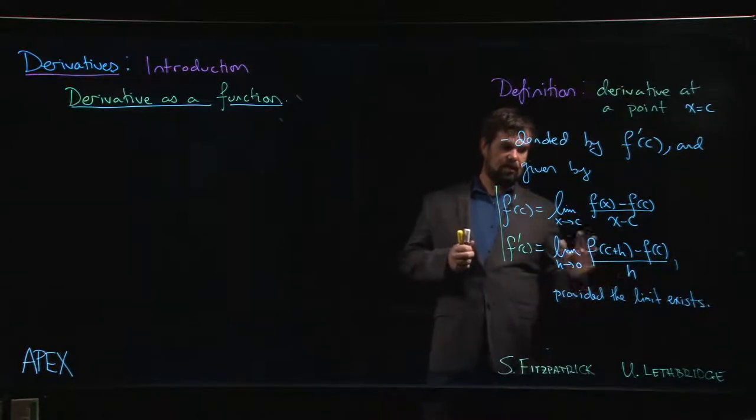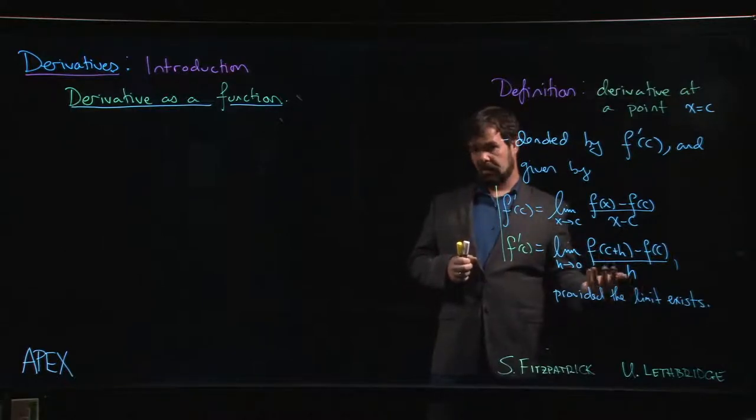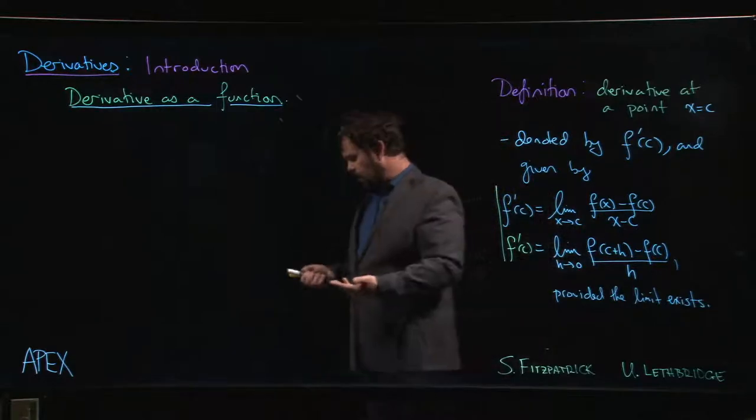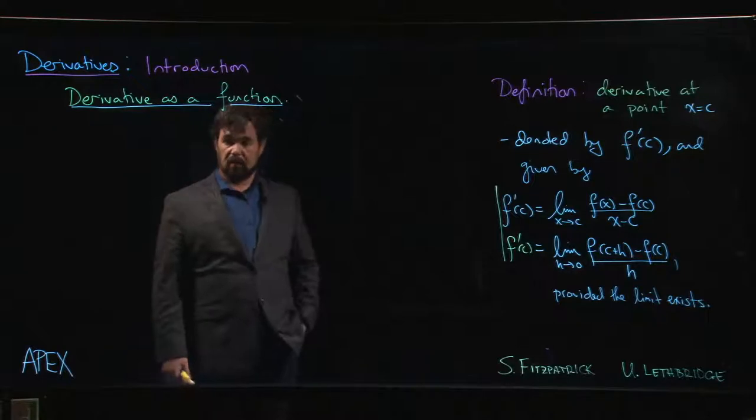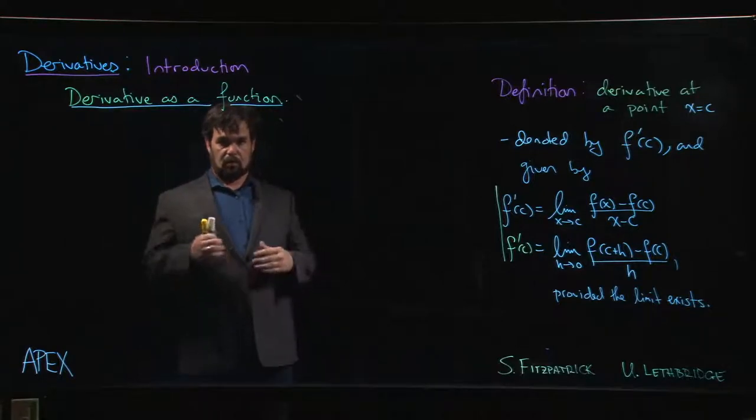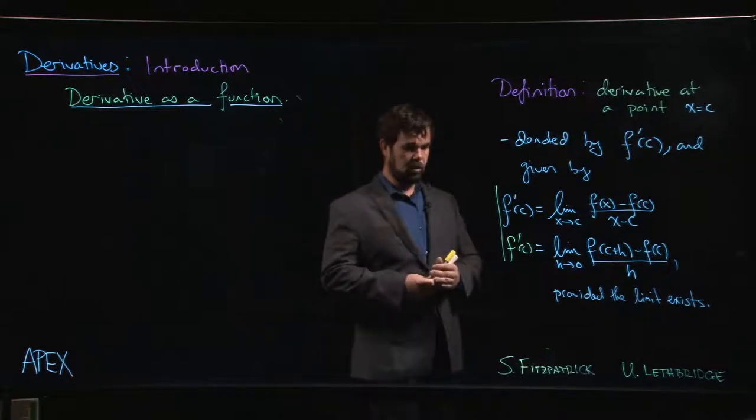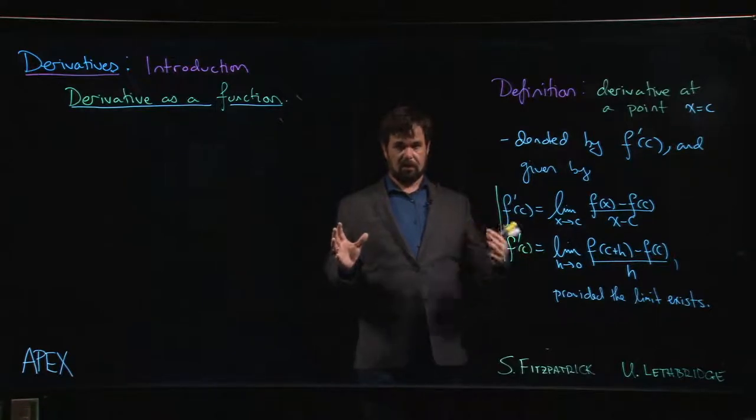Now, derivatives would be fairly inefficient if we had to go and use a limit definition every time we wanted to calculate a slope or any kind of derivative. If we had to do this for every value, we probably wouldn't be very happy. So through the rest of the chapter on derivatives, what we're going to do is develop tools to calculate derivatives quickly and efficiently by proving a number of theorems.